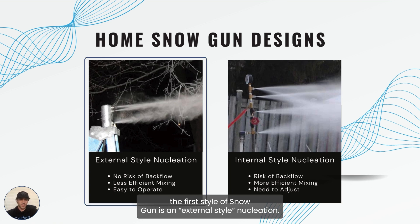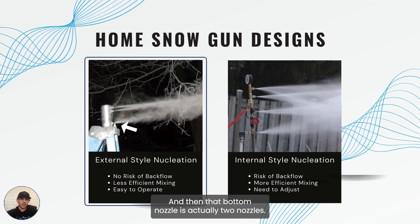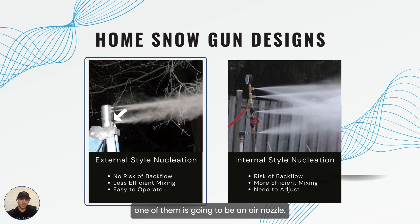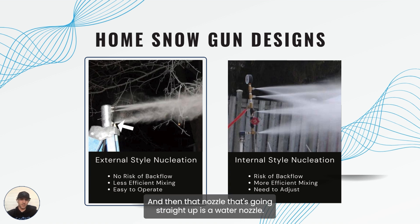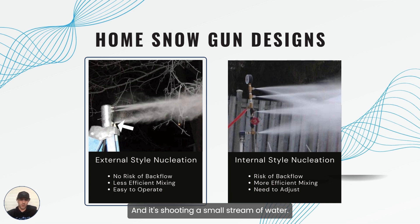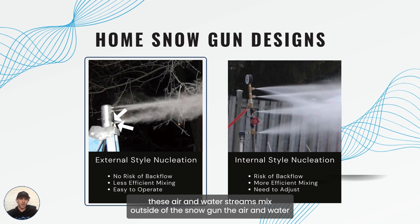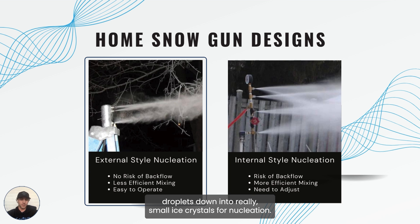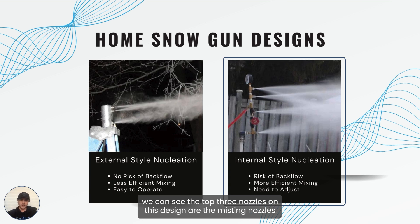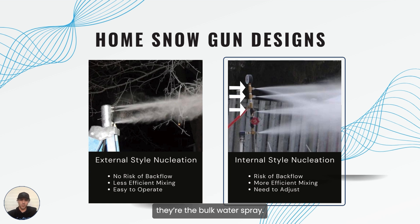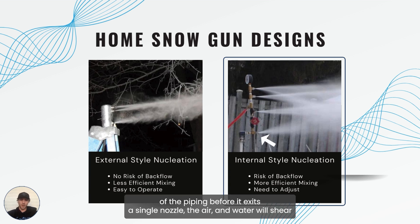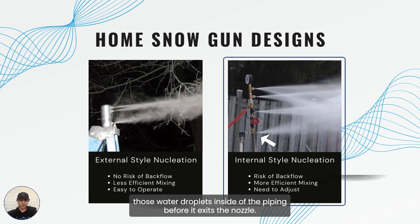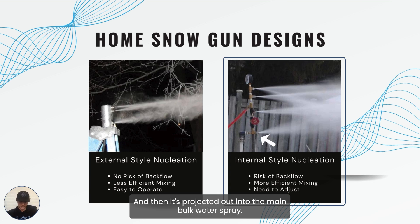There are two common home snow gun nucleation designs. The first is external style nucleation — you can see two misting nozzles on top, and the bottom assembly has an air nozzle projecting straight out and a water nozzle shooting a small stream upward. These air and water streams mix outside of the snow gun, and the compressed air breaks the water droplets into small ice crystals for nucleation. The second design uses internal style nucleation, where the bottom nozzle mixes air and water inside the piping before exiting a single nozzle, then projecting into the main bulk water spray.